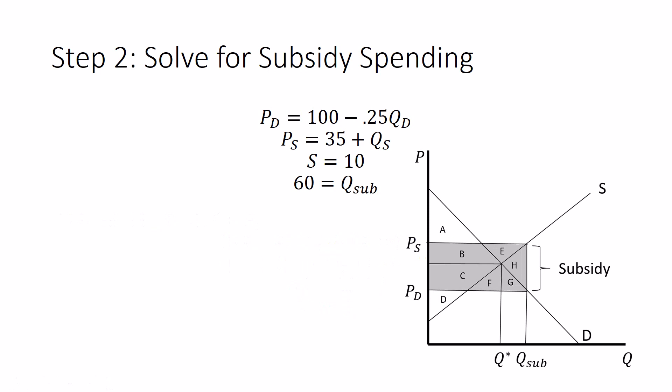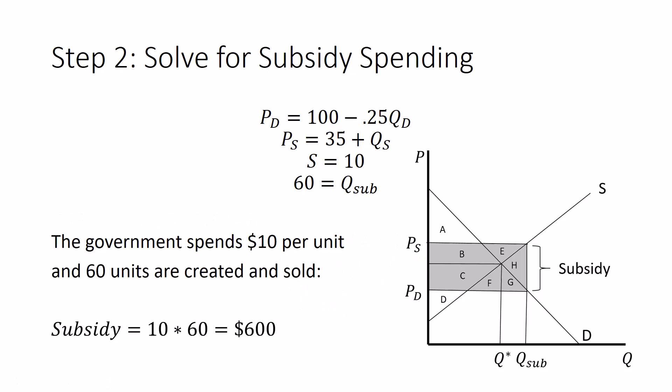So the first thing we could do is solve for subsidy spending. In my last video, I showed you a graph like this. Let's solve for the area of that gray rectangle using just math instead of adding A, B, C, E, F, G, H. The base of that rectangle is Q sub. The height of it is the subsidy. The government spends $10 per unit. 60 units are created and sold. The subsidy is 10 times 60, which is $600. So we're already done with that first bit. How much does the government spend on the subsidy? We got it.